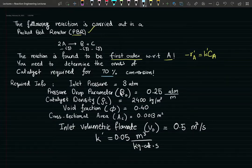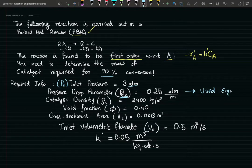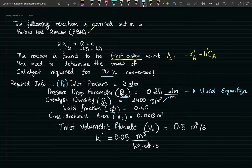The next step: we have the required process information. The inlet pressure, denoted by P₀, is equal to 3 atm. The pressure drop parameter alpha is used in the Ergun equation. We have the catalyst density, the void fraction of the bed (volume of empty bed divided by total volume), cross-sectional area of the tube, inlet volumetric flow rate, and the rate constant — we'll talk about its units in a second.